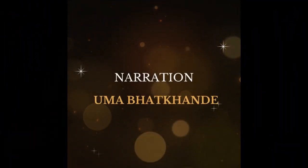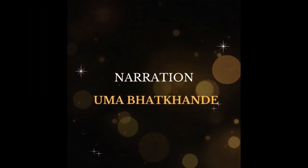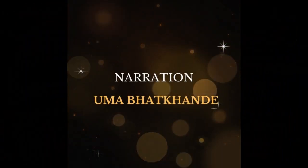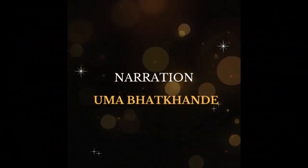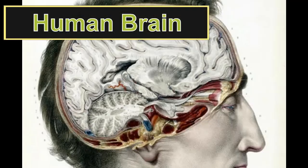Today we discuss the human brain. The human brain is the central organ of the human nervous system. The human brain is comprised of 10 to the power of 11 nerve cells. This presentation is by Shreyas R.